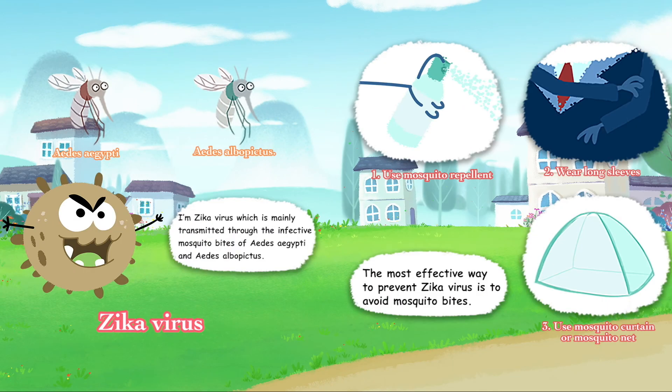I'm Zika Virus, which is mainly transmitted through the infected mosquito bites of Aedes aegypti and Aedes albopictus. The most effective ways to prevent Zika Virus are: (1) use mosquito repellent, (2) wear long sleeves, and (3) use a mosquito curtain or mosquito net.